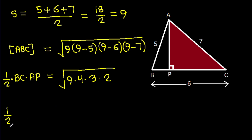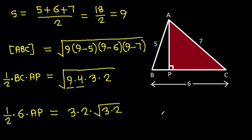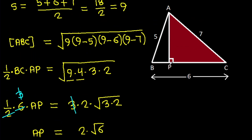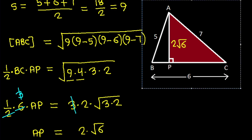It is root under 9 times 4 times 3 times 2, and also 1 over 2 times BC is 6 times AP. So root 9 is 3, root 4 is 2, times root 6, and simplifying with the 6 and cancelling the 3, we get AP is 2 times root 6.